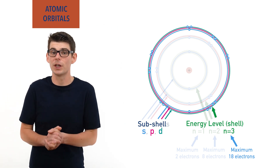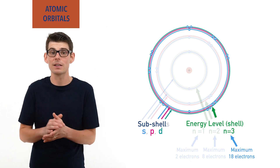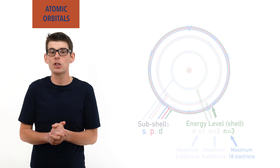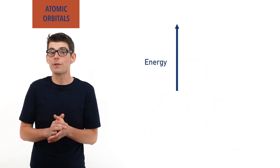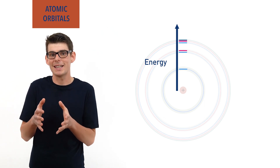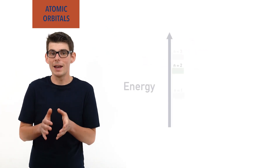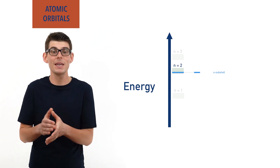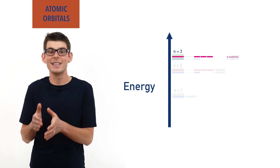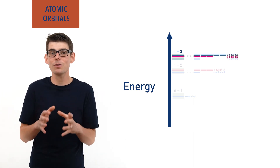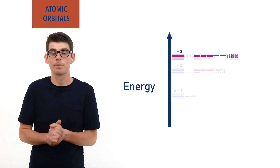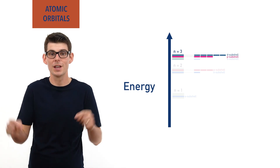Throughout this video I've made a point of referring to how the orbitals in S, P and D subshells all have slightly different energies to each other, even in the same energy level. We can show this using energy level diagrams, with energy on the Y axis. As subshells get further away from the nucleus, the energy of the electrons in them increases. Each orbital within a subshell is shown as a short dash. For example, in the second energy level, electrons in the S subshell are lower in energy than electrons in the P subshell. For the third energy level, electrons in the P subshell are lower in energy than electrons in the D subshell. This is really important in chemistry, as electrons in atoms always want to be as stable as possible, meaning orbitals always get filled up in a specific way — covered in a separate video about electron configurations.